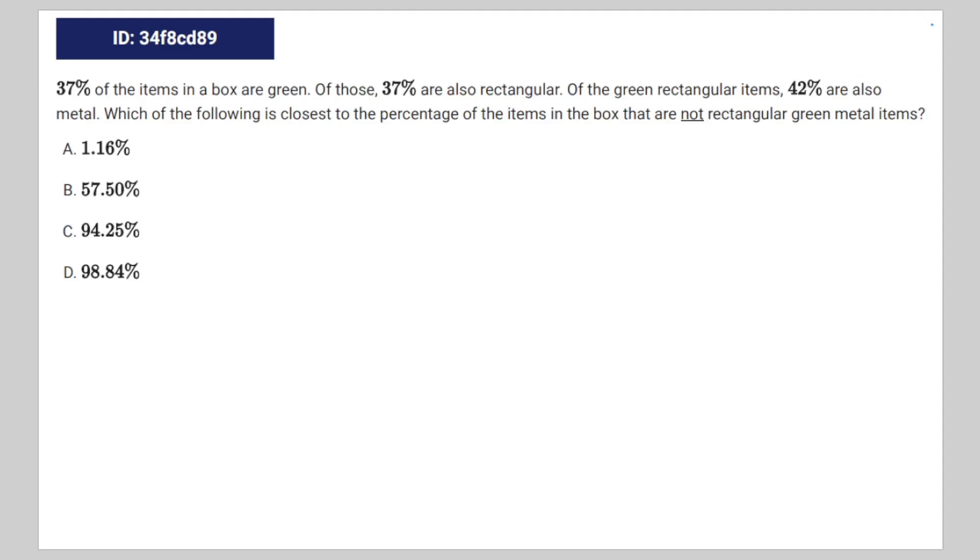So we're given the following math problem. 37% of the items in the box are green. Of those, 37% are also rectangular. Of the green rectangular items, 42% are also metal. Which of the following is closest to the percentage of items in the box that are not rectangular green metal items?